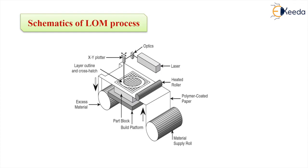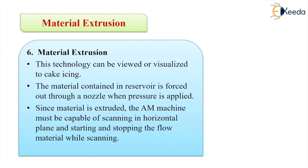So this is laminated object manufacturing or sheet lamination. And the last classification we are having is material extrusion.